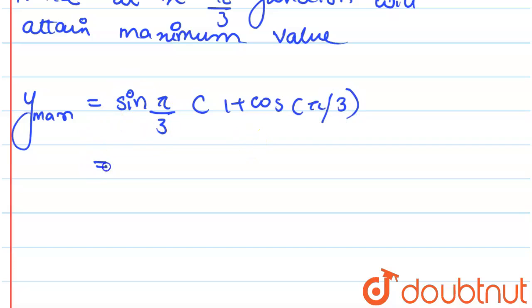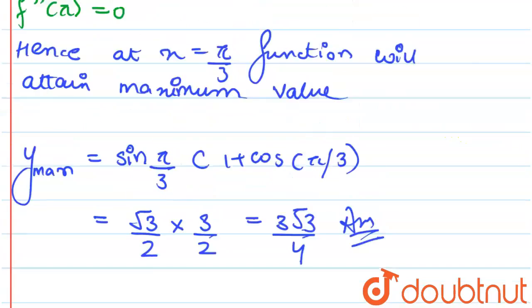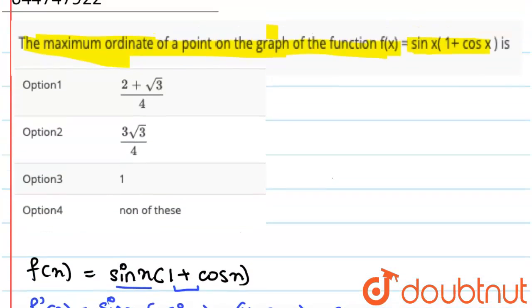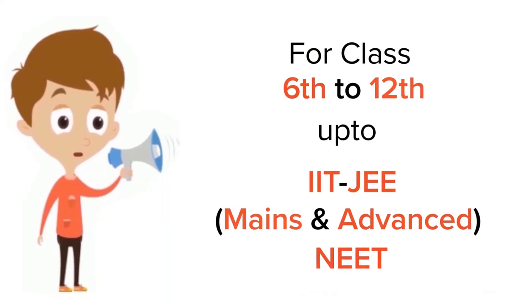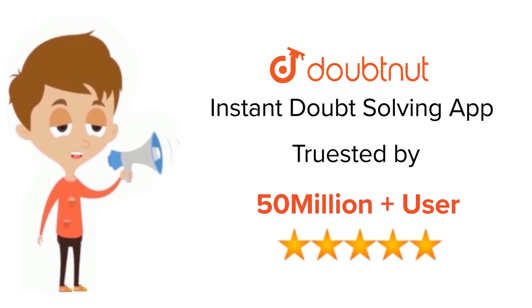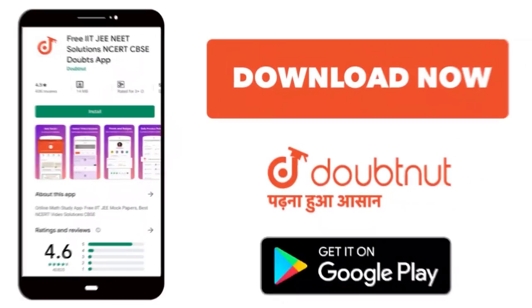So the value for sin(π/3) is √3/2 and here 1 + cos(π/3) will give you 3/2. So this will give you 3√3/4 as your final answer. Now let us see which of the following option it matches. So option 2 is your correct answer. Thank you.